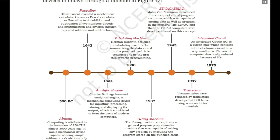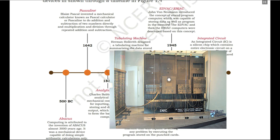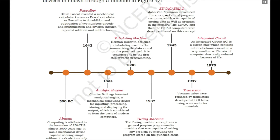The first computers developed on the principle of Mr. John Von Neumann were EDVAC and then ENIAC. Those computers were developed based on the concept that both the program and data will be stored in memory before they are picked up by the processing unit.